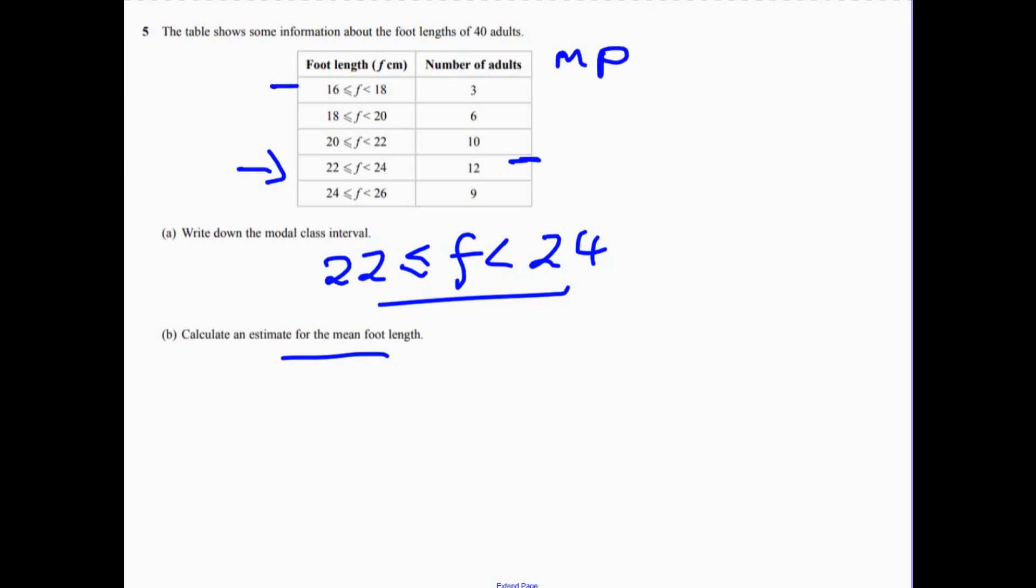We need the midpoint because we're going to say that these three adults have all got a foot length of 17. Now clearly they haven't all got a foot length of 17, and then we're going to multiply by the 3.